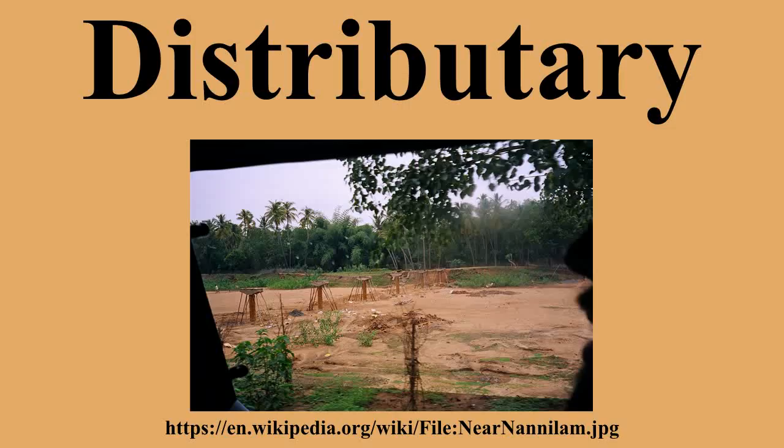In British Columbia, Canada, the Fraser River has numerous sloughs and side channels which may be defined as distributories, but its final stretch has three main distributories: the North Arm and the South Arm, and a few smaller ones adjoining them.